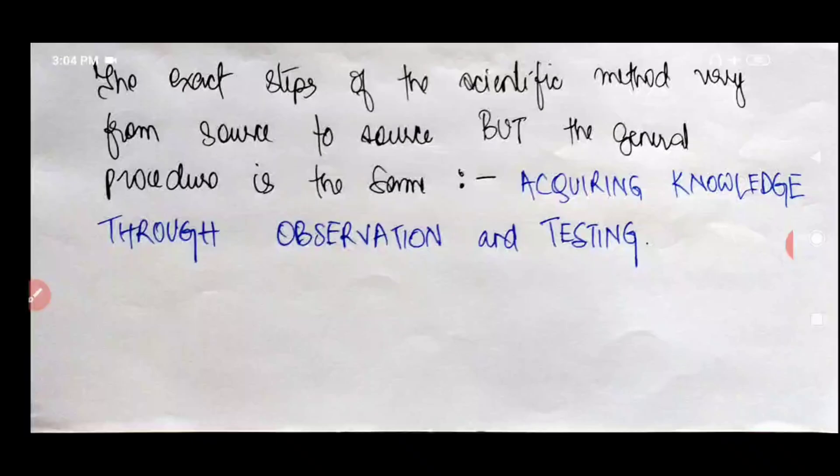The exact steps of the scientific method may vary from source to source. But the general procedure stays the same. What is that? Acquiring knowledge through observation and testing. So this is what makes a method scientific.